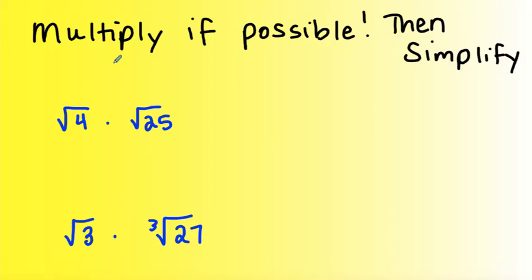So let's look at some examples. We're going to multiply if possible, then simplify. So our first example, we have the square root of 4 times the square root of 25. The indexes are the same, so we can either simplify them individually or multiply them. In this case, I think it's easier to multiply because 25 times 4 is 100, and the square root of 100 is the whole number 10.